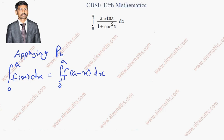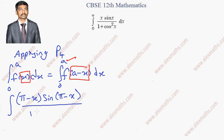Every x is replaced with a minus x, where a is nothing but the upper limit of the given integration limits. So in this question, if I replace, the first x will become pi minus x into sin of pi minus x whole divided by 1 plus cos square of pi minus x into dx.